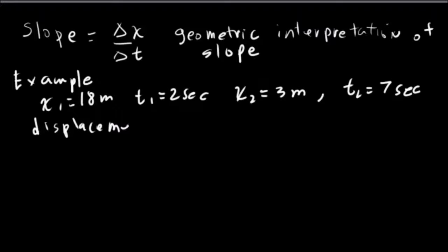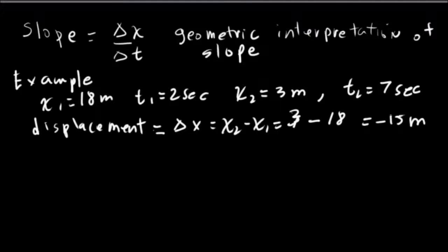Which is just delta x. So that's x2 minus x1. So x2 is 3 minus x1 is 18. So that's equal to minus 15 meters. So it went 15 meters to the left.